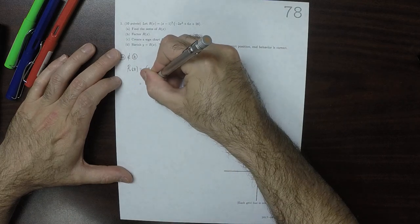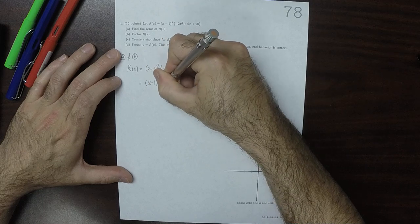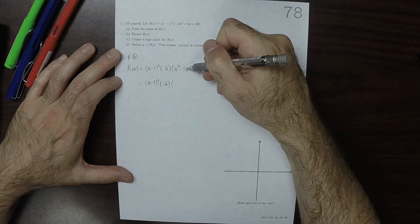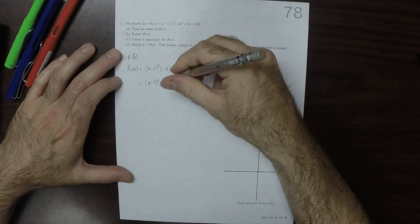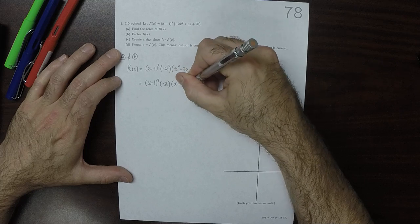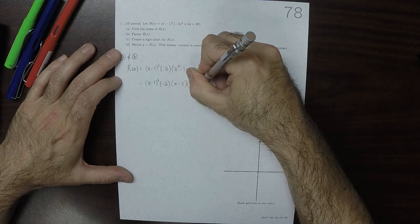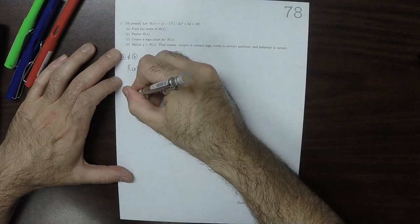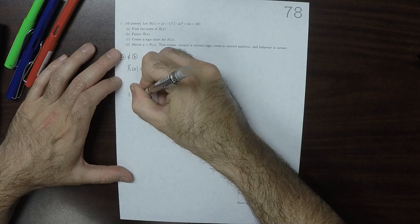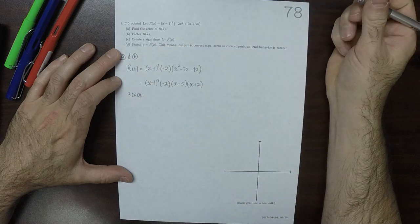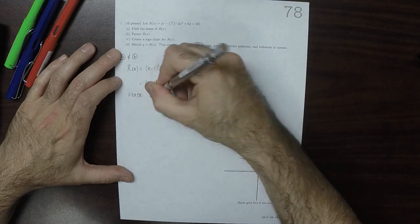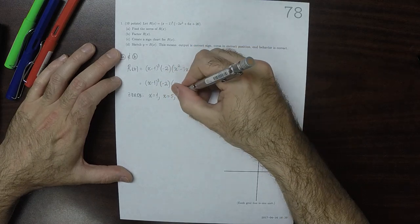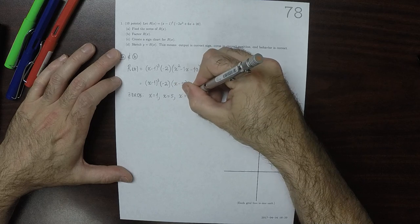So that would be x minus 1 cubed times negative 2 times x minus 5 times x plus 2. OK. And therefore, the zeros can be read from that factorization. The zeros are x is 1, x is 5, and x is negative 2.